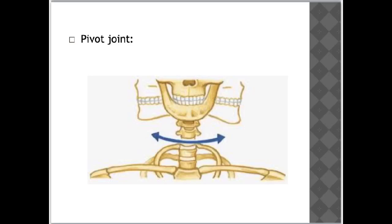A pivot joint allows fixed movement between bones in a rotary fashion, in two directions — forwards and backwards. This type of joint is found in the neck, allowing the head to turn left and right, and also just below the elbow joint with your radius and ulna, which allows your lower arm to rotate.